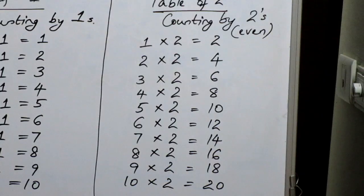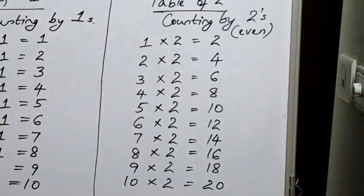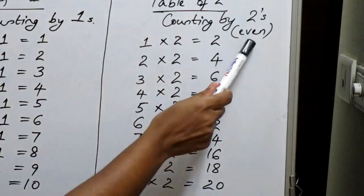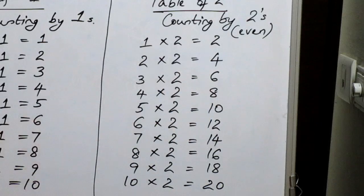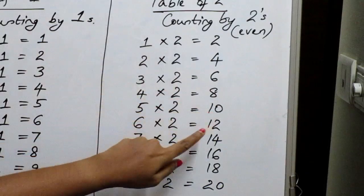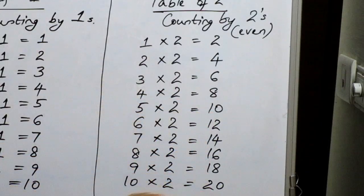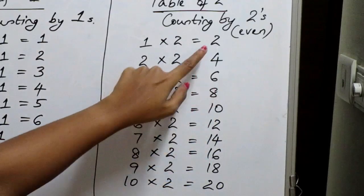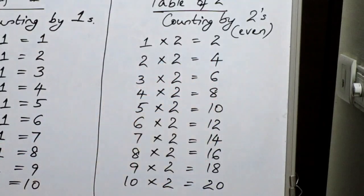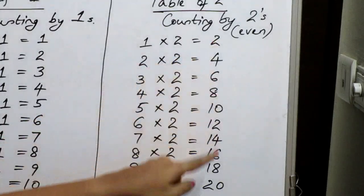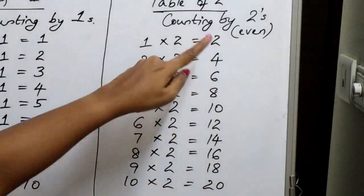For learning the multiplication table of 2, we need to memorize only the even numbers, which are counting by 2's. We all know counting by 2's — even numbers, right? Starting from 2: 2, 4, 6, 8, 10, 12, 14, 16, 18, 20. That is, we are adding 2 plus 2 is 4, 4 plus 2 is 6, 6 plus 2 is 8, likewise. So this is the even number set starting from 2 to 20.